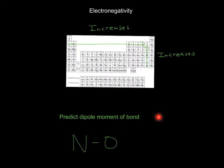For this problem, we predict the dipole moment of this bond, N and O. Electronegativity increases to fluorine across and up the periodic table.